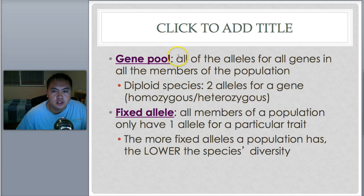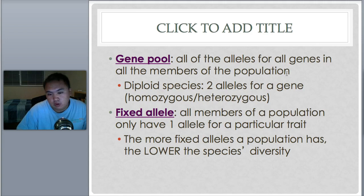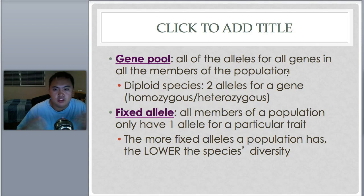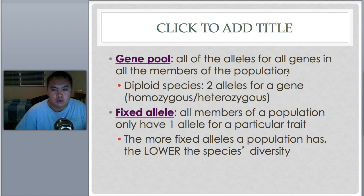A gene pool is all the alleles for all genes in all the members of the population — basically all the possibilities. For example, what if the whole human population only had black and red hair? In real life, all the alleles would include brown, blonde, black, white — all the alleles for genes. That's the gene pool, the whole range of possibilities.